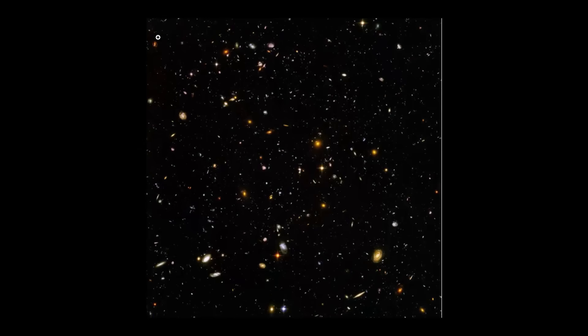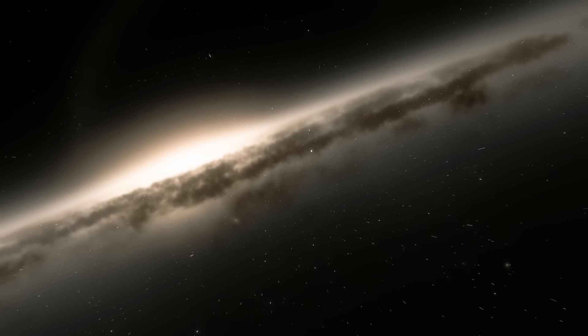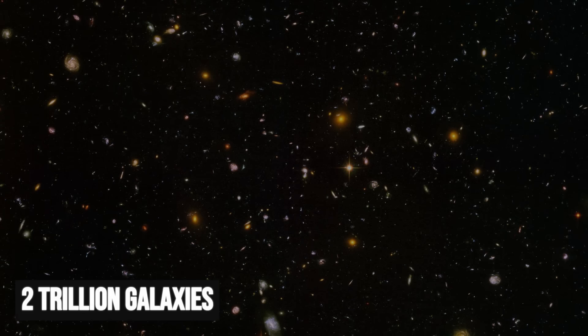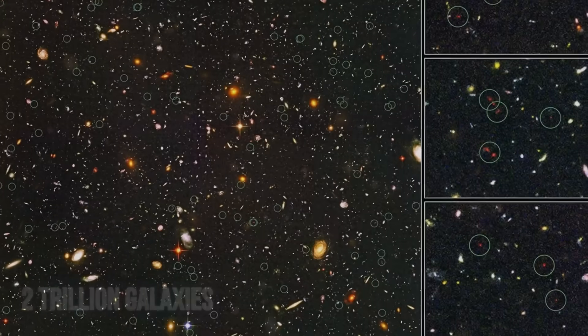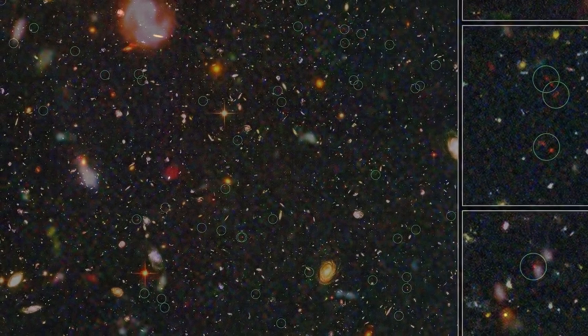This single image, just a speck against the night, became the foundation for estimating that the observable universe contained as many as 2 trillion galaxies. For years, the Ultra Deep Field was the best map we had of the distant cosmos, a window into the universe's childhood.